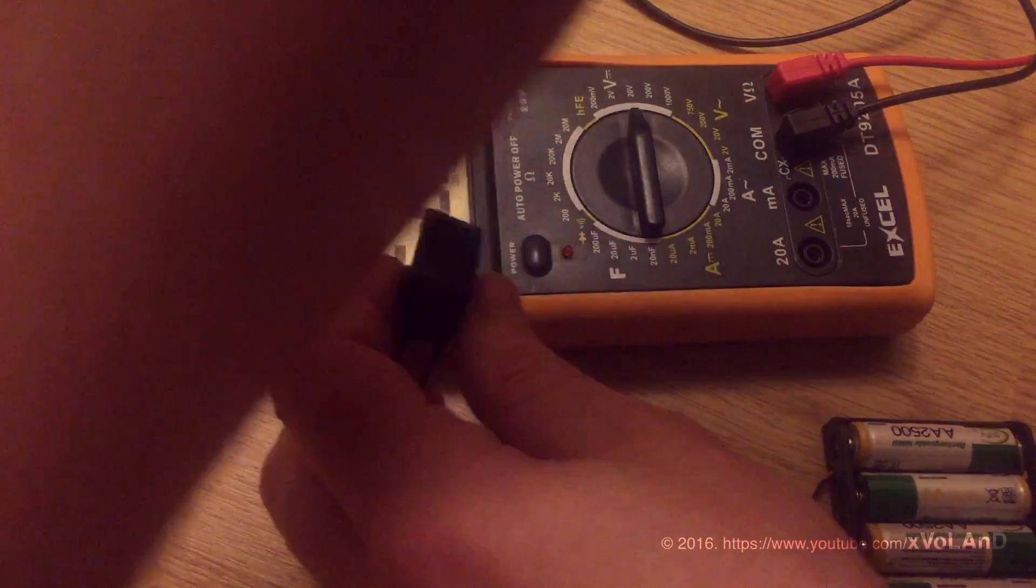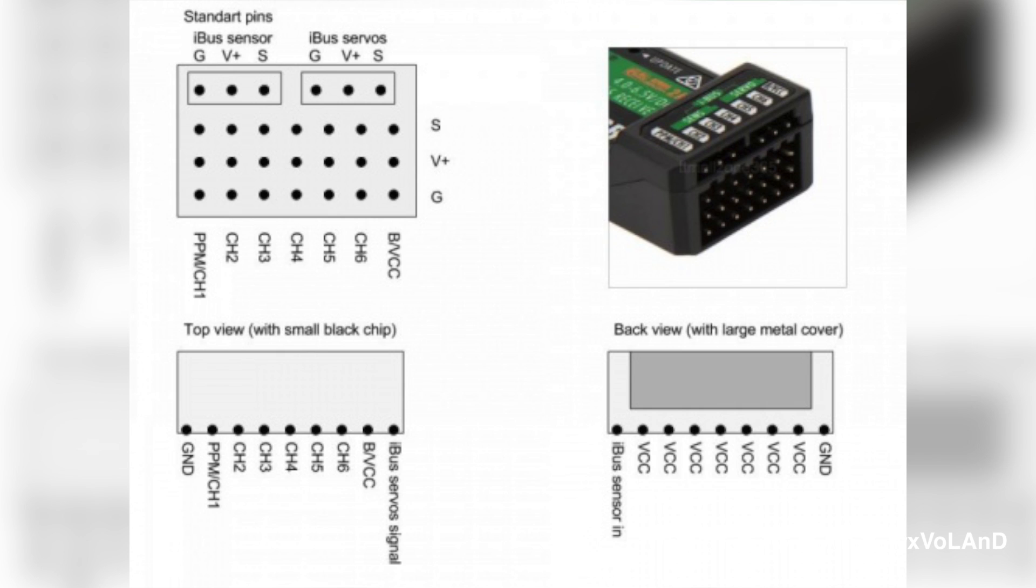Next step, you need the receiver body. From top to down, the top pin is the signal, next pin is plus, and ground.